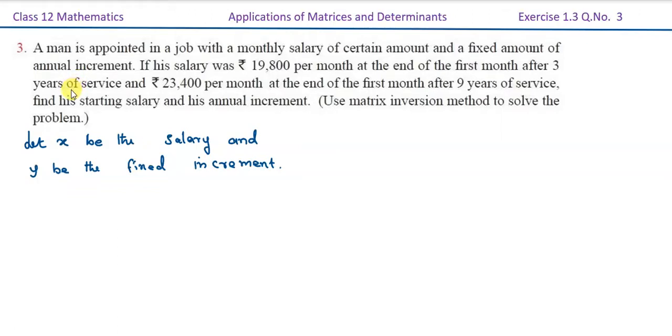This is Class 12 Mathematics, Unit 1, Exercise 1.3, Question Number 3. A man is appointed in a job with a monthly salary of certain amount and a fixed amount of annual increment. His salary was ₹19,800 per month at the end of the first month after three years of service, and ₹23,400 per month at the end of the first month after nine years of service. Find his starting salary and his annual increment using matrix inversion method to solve the problem.